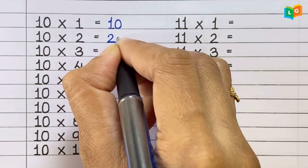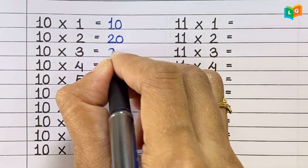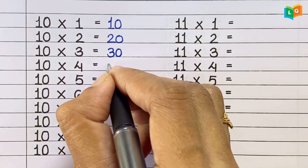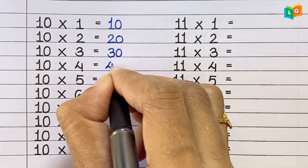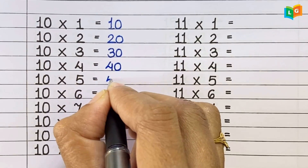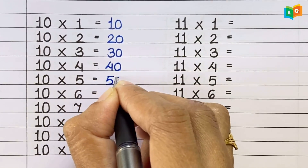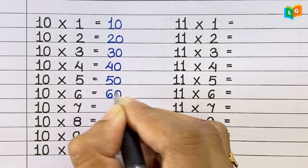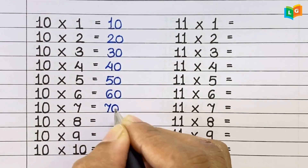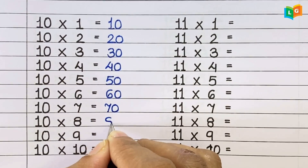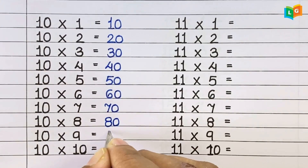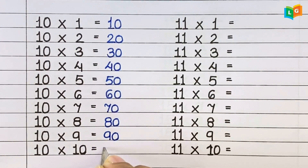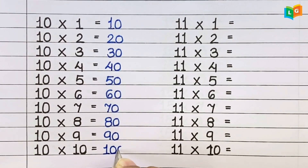Now let's see table of 10. 10 1s are 10, 10 2s are 20, 10 3s are 30, 10 4s are 40, 10 5s are 50, 10 6s are 60, 10 7s are 70, 10 8s are 80, 10 9s are 90, 10 10s are 100.